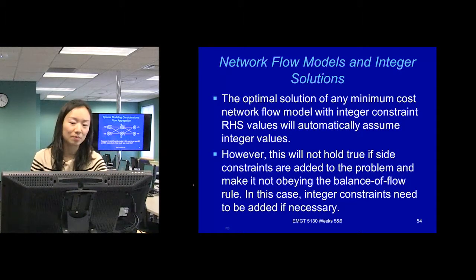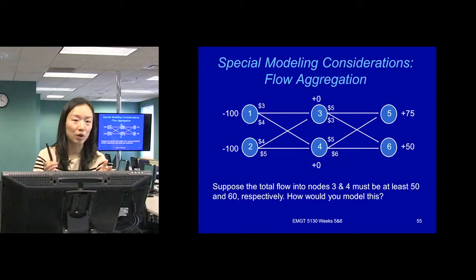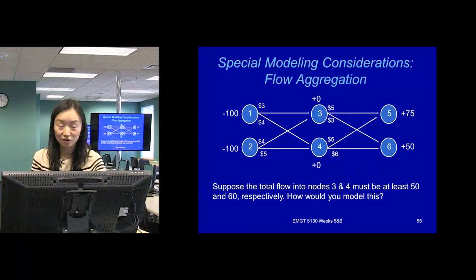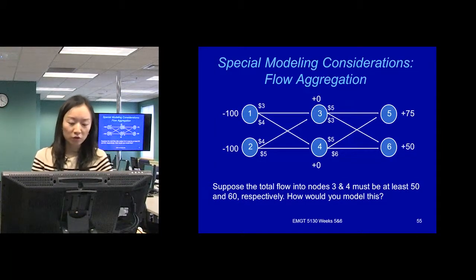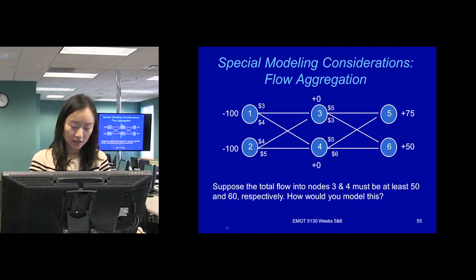Here I've introduced some special modeling considerations to make the constraints still follow the balance flow rule. For example, suppose the total flow into nodes 3 and 4 must be at least 50 and 60, respectively. How would you model this one?